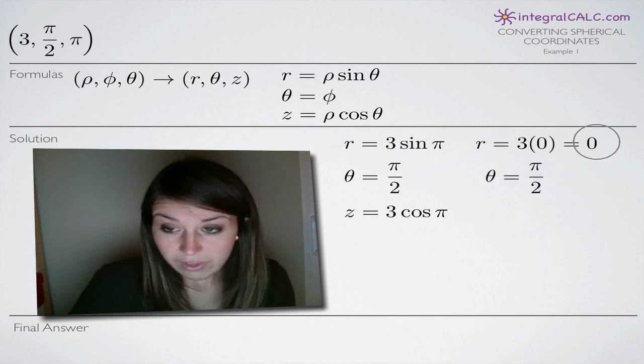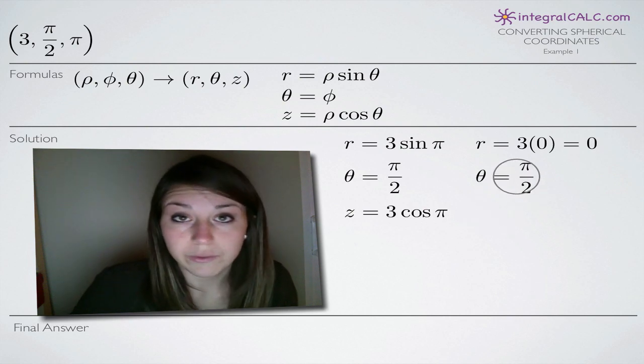Sin π on the unit circle is 0. The value at the angle π on the unit circle for the y-coordinate, which is sine, is equal to 0. So we plug in 0 for sin π and we get 3 times 0, which is equal to 0. Theta is still equal to π/2; nothing we can do to simplify that one.